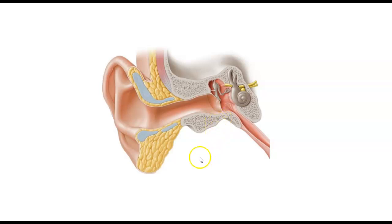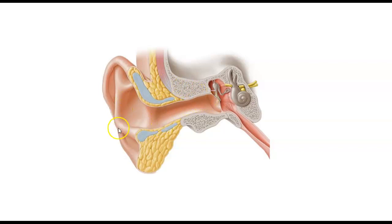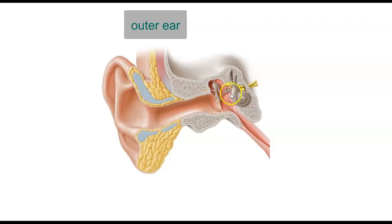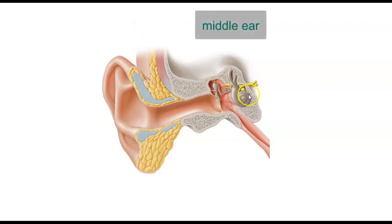Today's lecture is about the anatomy and physiology of the ear. The first thing you have to understand about the ear is that it's divided into three general areas: outer ear, middle ear, and inner ear.